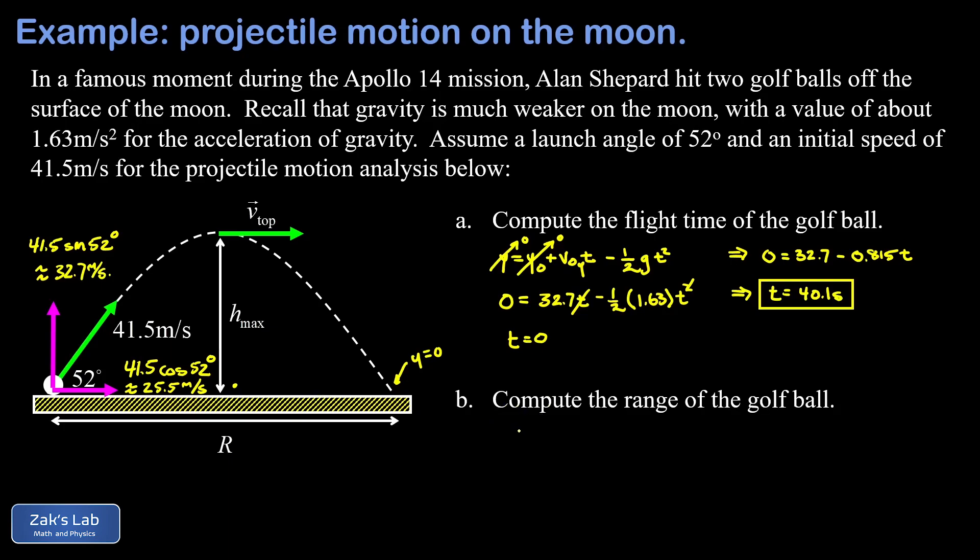To describe the motion horizontally, we can write x equals x naught, the initial x coordinate, plus the initial x velocity v naught x times how long it does this for, and that's the flight time t that we got in part a. We're implicitly putting the origin at the starting point, so x naught is zero. The final x value is what we call the range capital R. So we'll get the range from our initial x velocity of 25.5 meters per second multiplied by the flight time, 40.1 seconds.